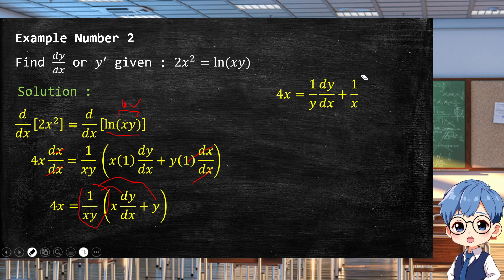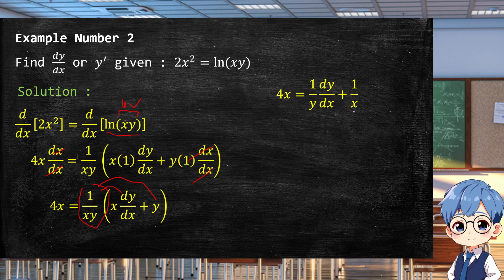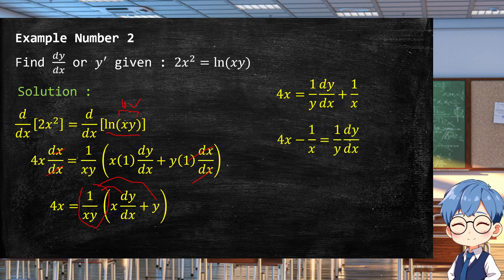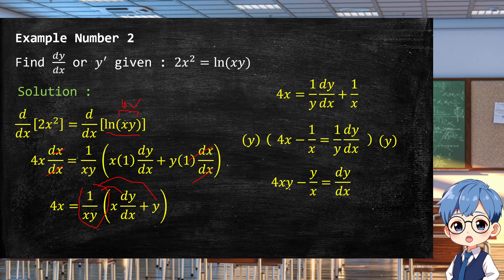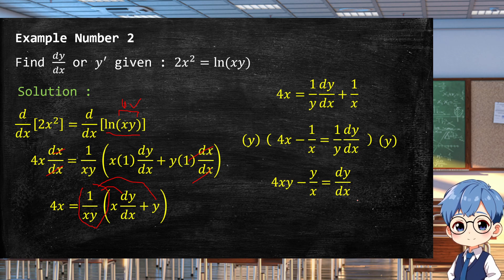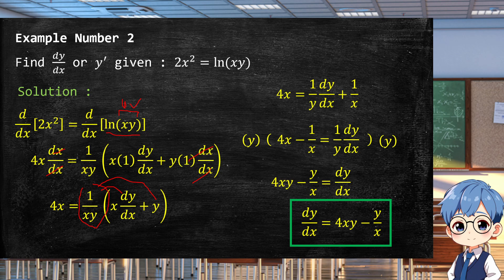To isolate dy/dx, we transpose 1/x to the other side: 4x − 1/x = (1/y)·dy/dx. Multiplying both sides by y gives dy/dx = (4xy − y)/x. Using the symmetric property of equality, the final answer is dy/dx = (4xy − y)/x.